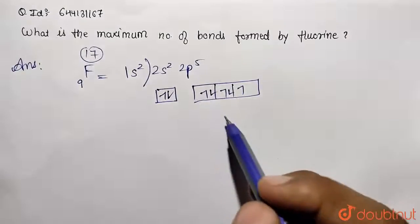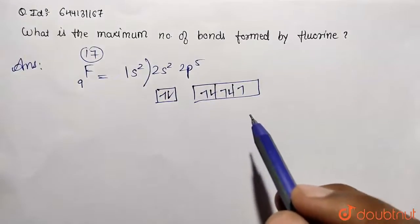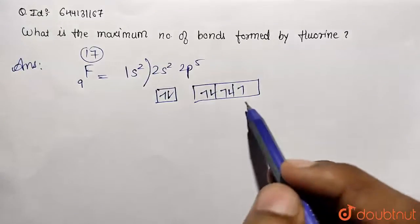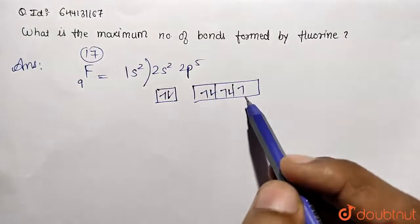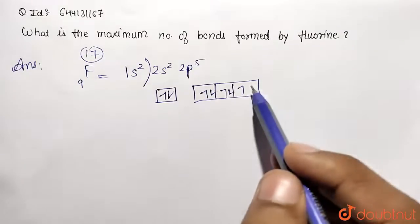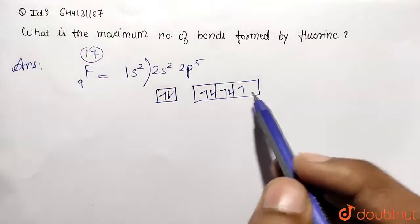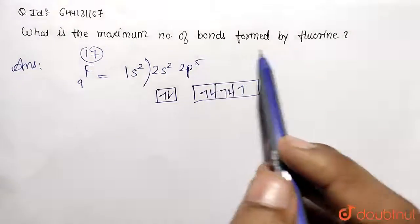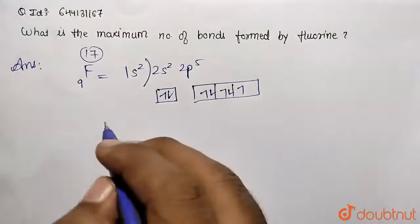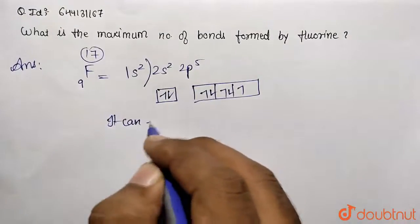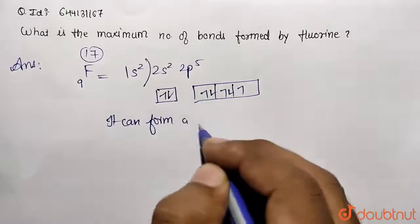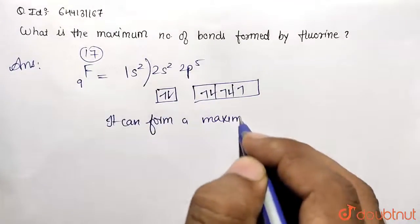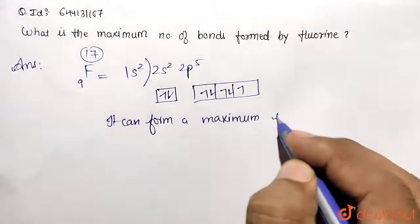Now, if you want to see the stabilization with respect to inert gas, it is 1 electron less. That means it is easily accepting 1 electron and forming a compound. That means the maximum bond that can be formed by fluorine is only 1. It can form a maximum of 1 bond only.